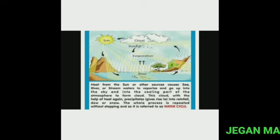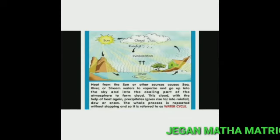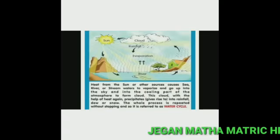This cloud, with the help of the heat again, precipitates into rainfall, dew or snow. The whole process is repeated without stopping and so it is referred to as water cycle.